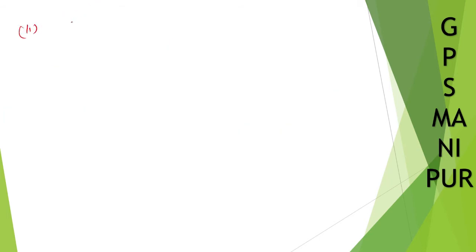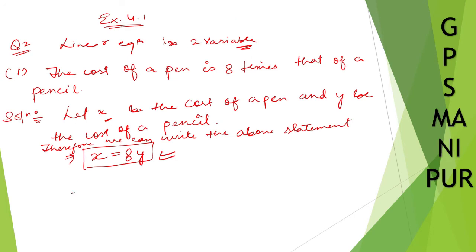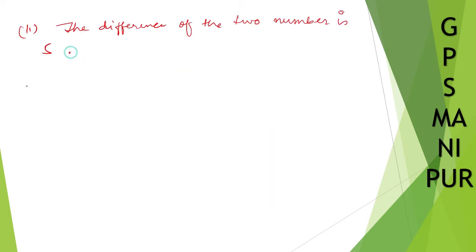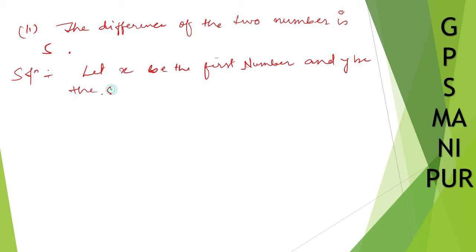Problem number 2: The difference of the two numbers is 5. Solution: Let x be the first number and y be the second number. Therefore, x minus y is equal to 5. That's all for this one.